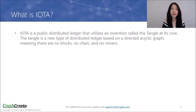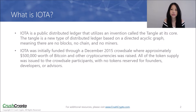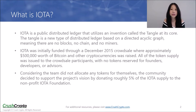IOTA is a public distributed ledger that utilizes an invention called the Tangle at its core. The Tangle is a new type of distributed ledger based on a directed acyclic graph, meaning there are no blocks, no chain, and no miners. IOTA was initially funded through a December 2015 crowdsale where approximately $500,000 worth of Bitcoin and other cryptocurrencies was raised. All of the token supply was issued to the crowdsale participants with no tokens reserved for founders, developers, or advisors. Considering the team did not allocate any tokens for themselves, the community decided to support the project's vision by donating roughly 5% of the IOTA supply to the non-profit IOTA Foundation.